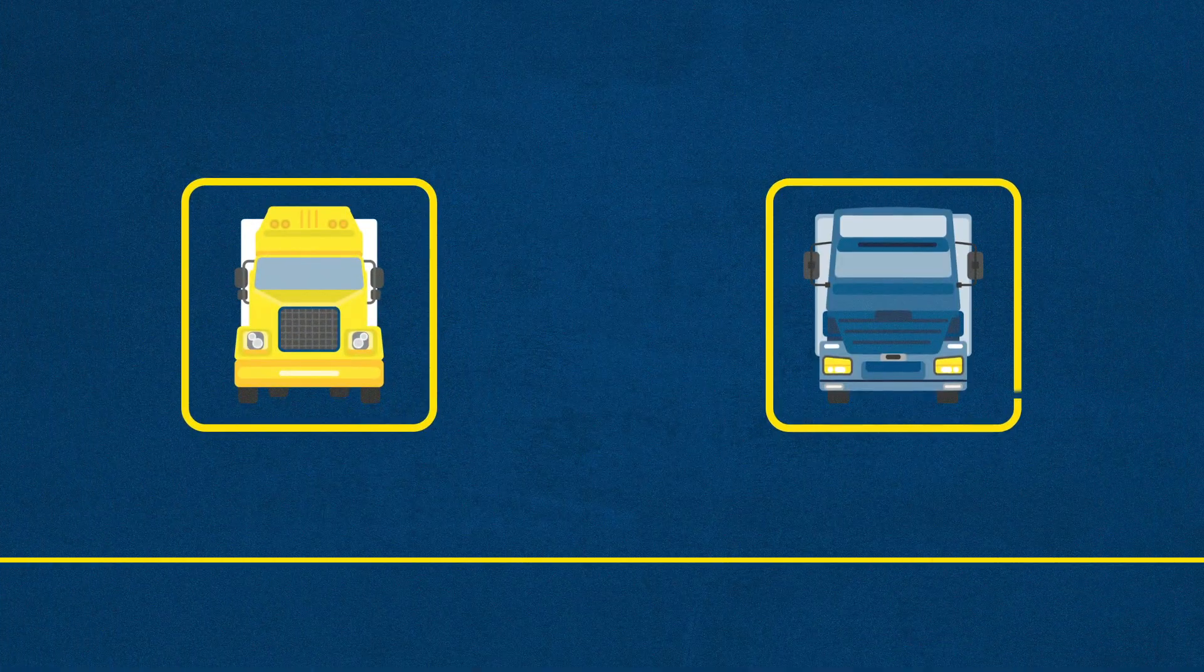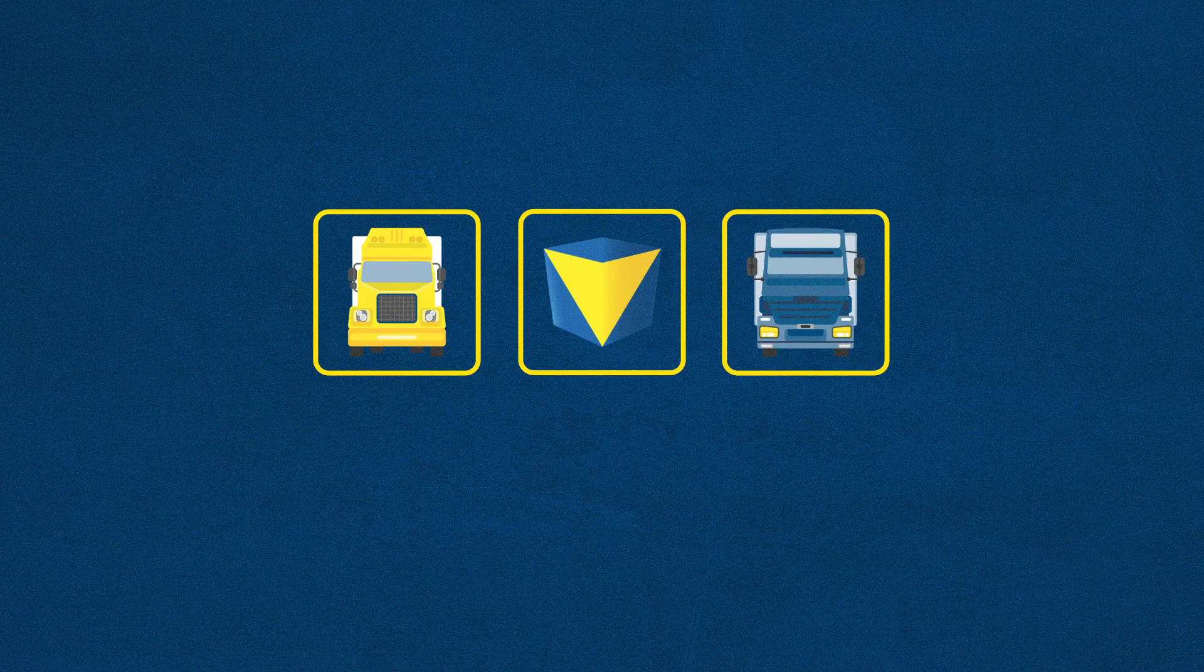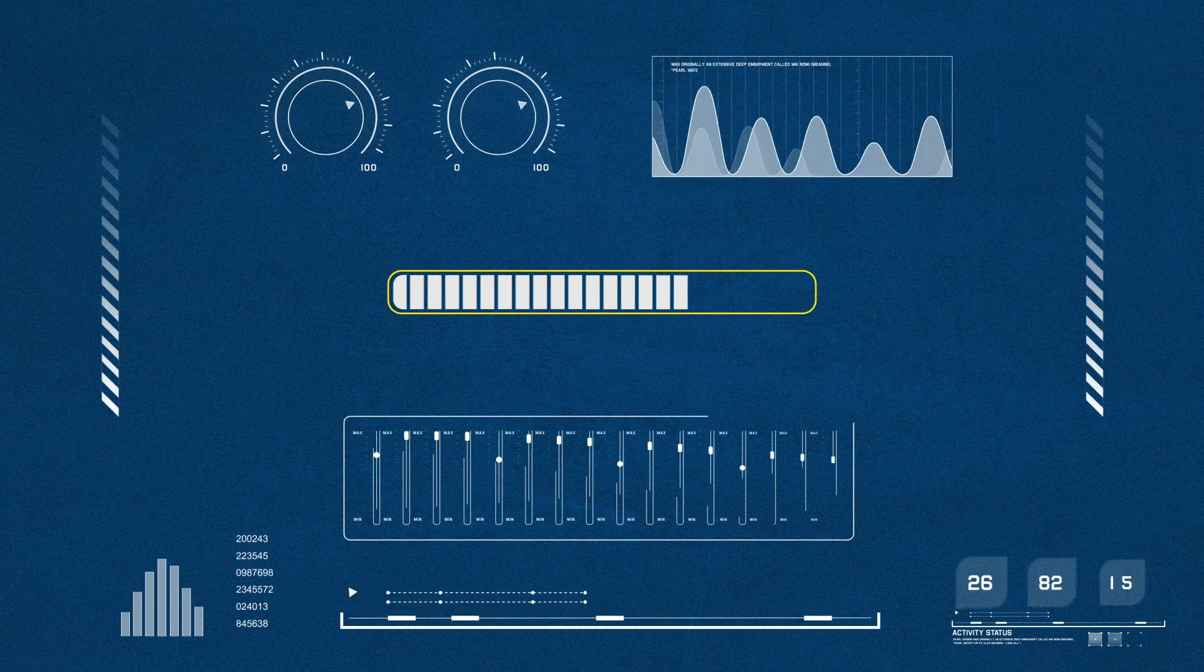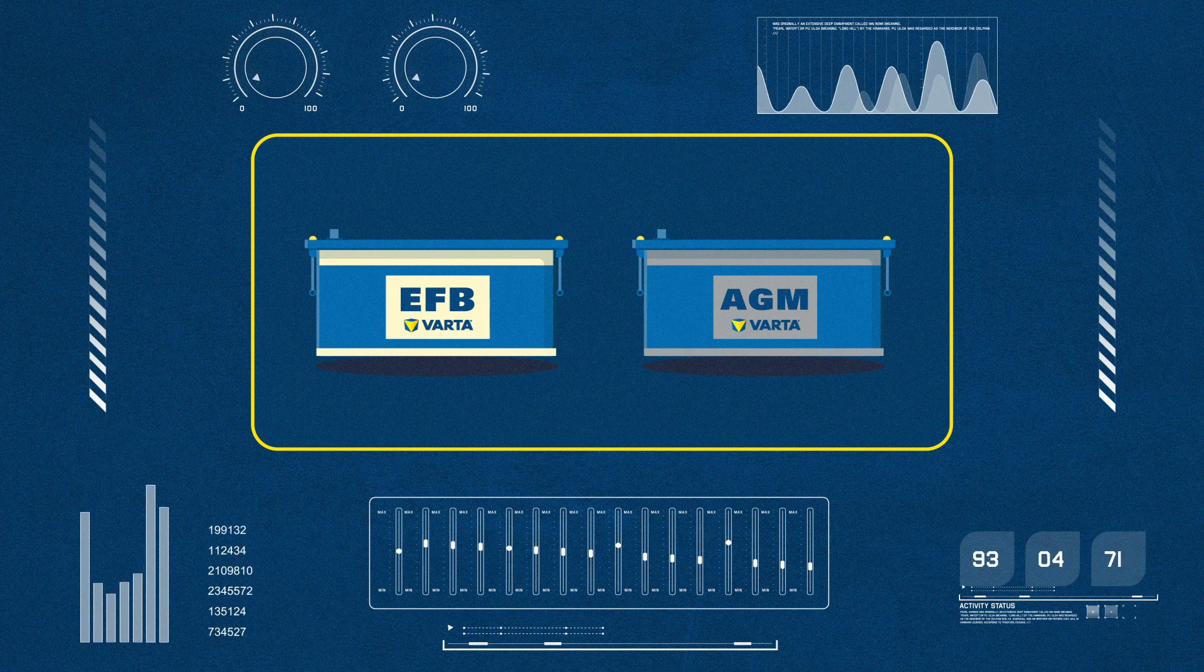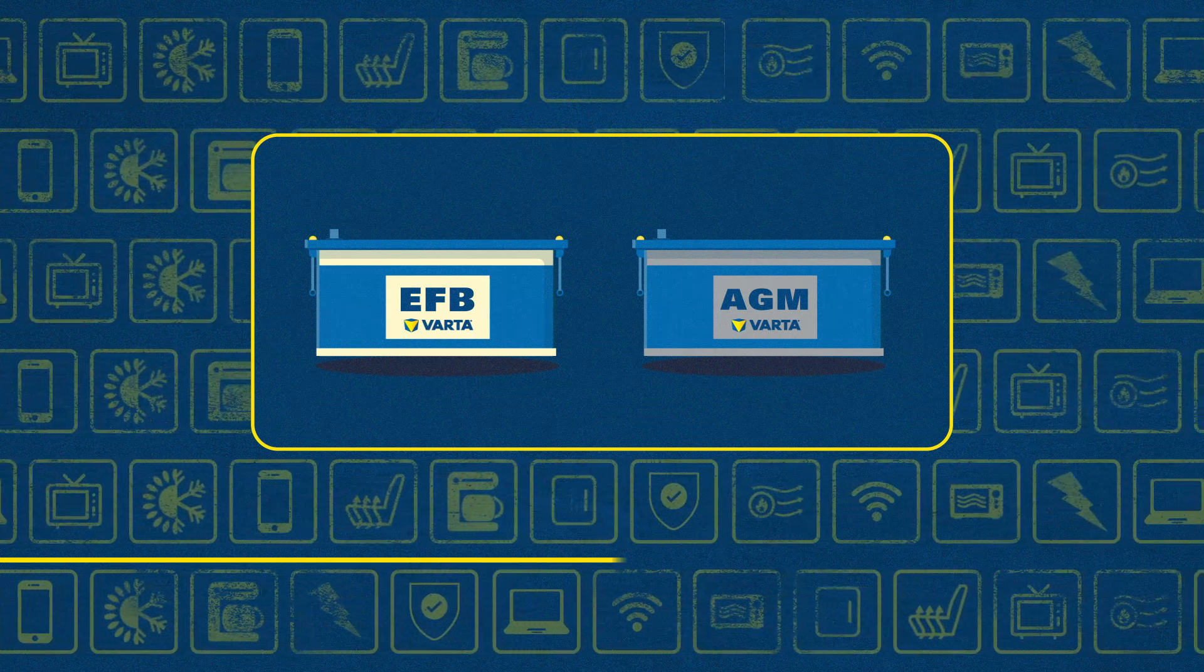Together with leading truck manufacturers, VARTA has been the pioneer developing advanced battery technologies like EFB and AGM, technologies that meet the increasing energy demands of today's trucks.